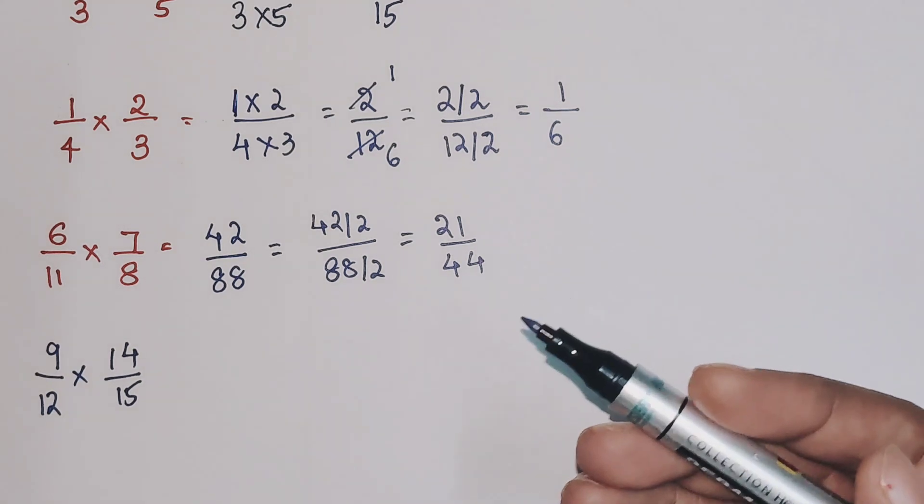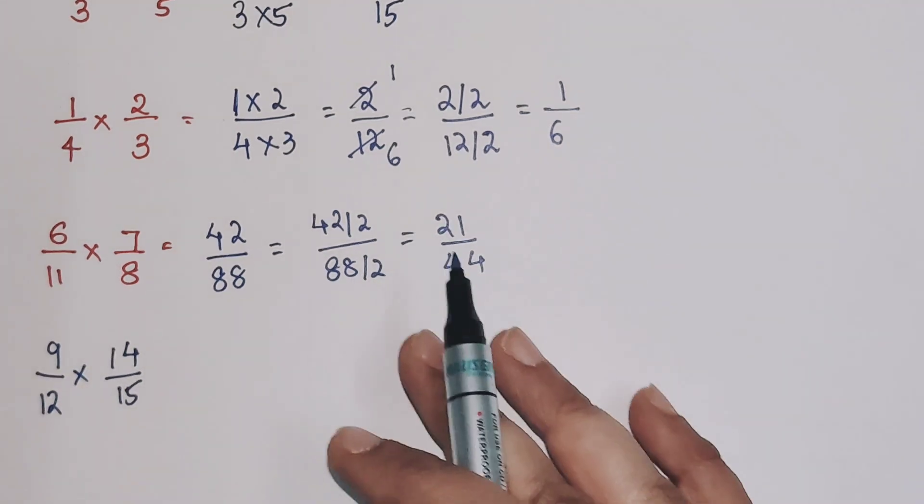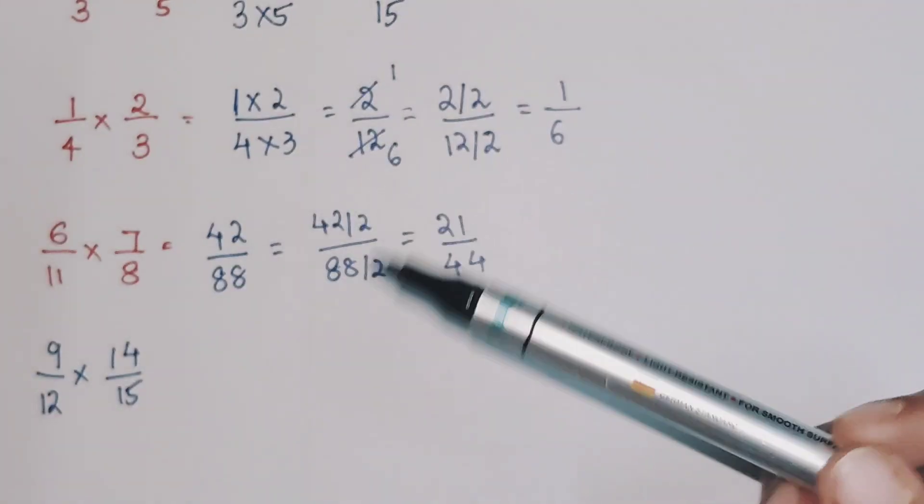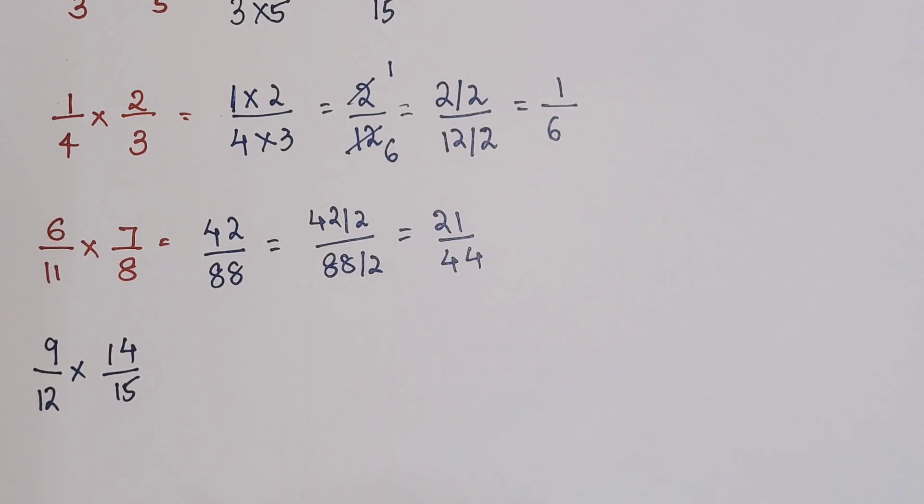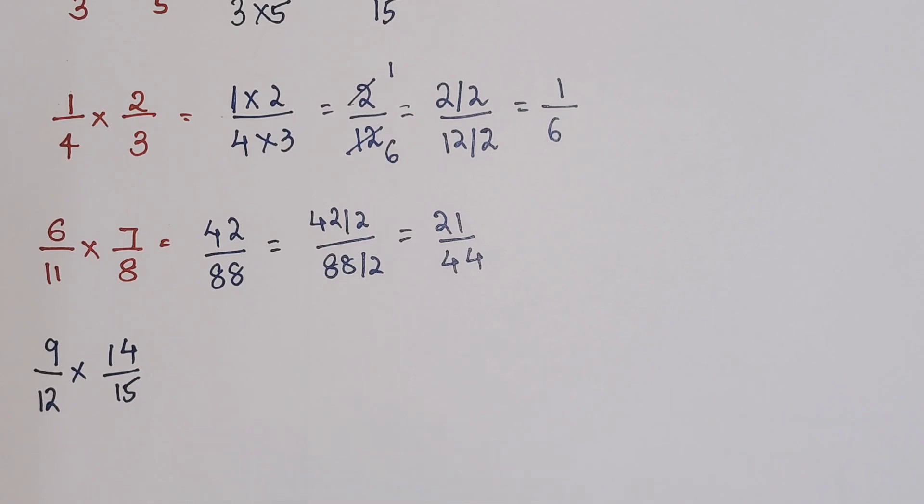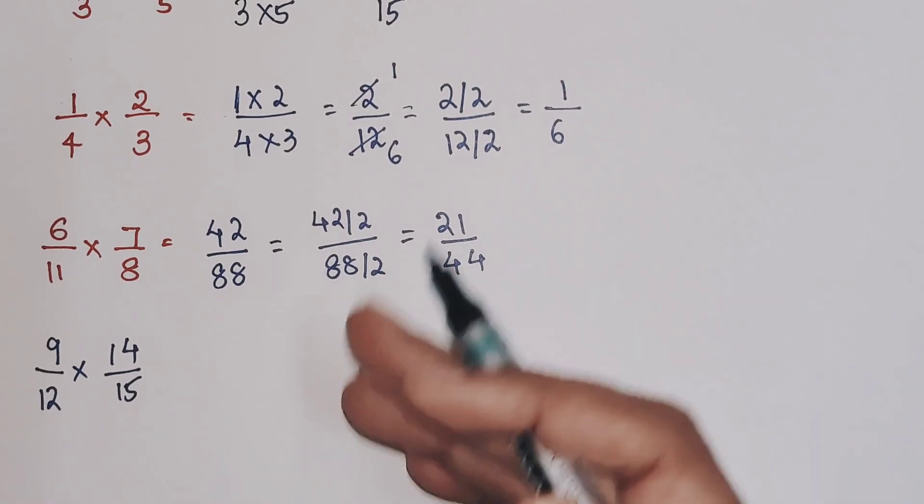So if you want to cancel something, you can always do that, but provided it is happening diagonally or vertically. It cannot do horizontally. I hope that is very clear to everyone. So now over here, see, if you look closely, I can definitely go and multiply 9 and 14 and 12 and 15, and then I can do the cancellations. But since I am teaching you tricks...